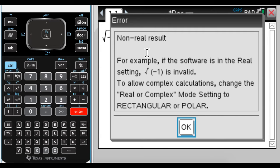And you're going to get this error that pops up and it says non-real result. For example, if the software is in real setting, the square root of negative one is invalid to allow complex calculations to change the real or complex mode setting to rectangular or polar. So that's what we're going to do.